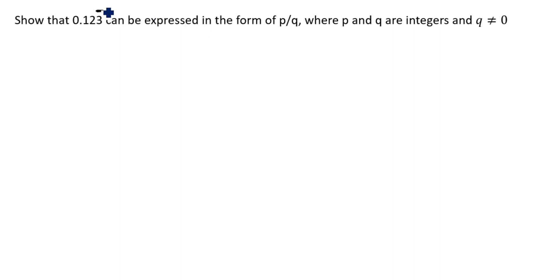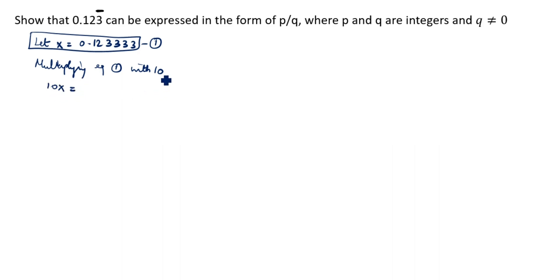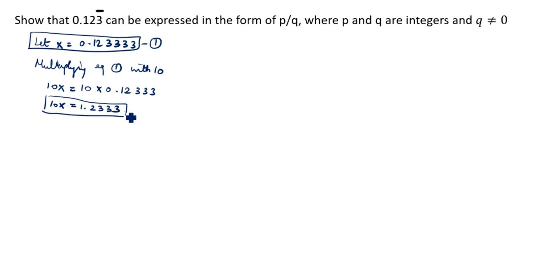In this, you see here only one number has a bar. So let x equal to 0.123333... — this is the first equation. Multiplying equation 1 by 10, since the bar is on only one digit, we write 10x. So 10 multiplied by 0.123333 gives 1.2333... This is the second equation.